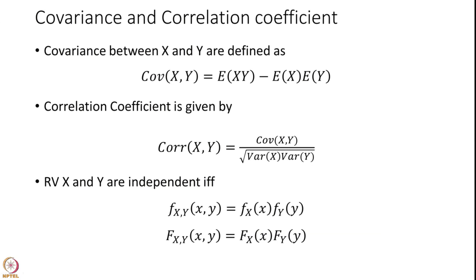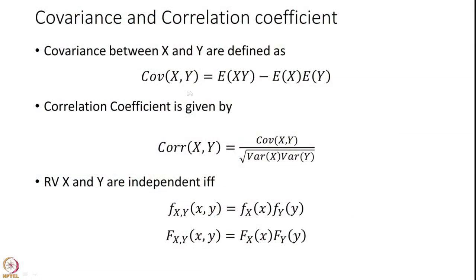Two important coefficients are the covariance of X and Y and the correlation coefficient between X and Y. We have done the same thing in descriptive statistics; here we are doing it for a general random variable rather than specific data. Covariance between X and Y is defined as Cov(X, Y) equals E[XY] minus E[X] times E[Y], and the correlation coefficient is defined as Cov(X, Y) divided by the square root of Var(X) times Var(Y).